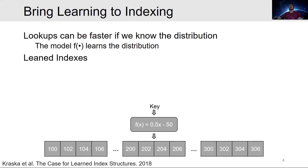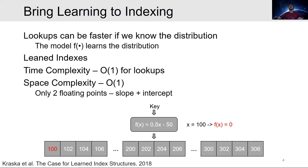Let's look at an example. We have an array of even integers starting from 100. A simple linear regression model learns the mapping to be 0.5x minus 50. Now, if we want to query key 100, we simply plug in x equals 100 and know that this key is at position 0. As we can see, we reach constant lookup time, and the memory cost of such a model is also constant, containing only the slope and the intercept.